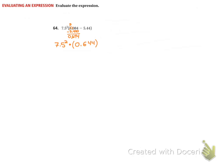Next, we have multiplication and we have exponents. So we're going to want to solve our exponent first. So this means 7.5 times 7.5.